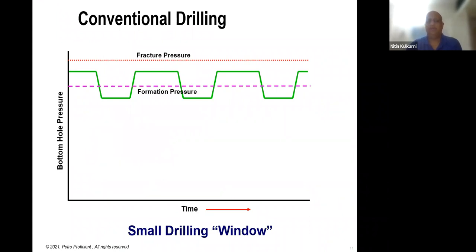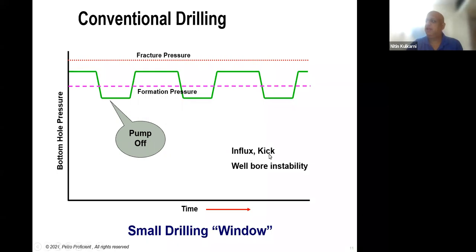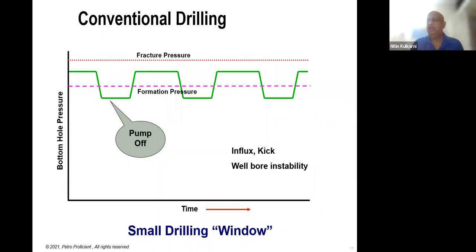These kinds of easy prospects are no longer available. What we have now is a profile with a very narrow margin between formation pressure and fracture gradient. With this narrow margin, when you switch off your pumps, pressure drops below formation pressure, and you might get an influx or a kick. You might also experience wellbore instability, where the open hole wall starts to collapse in the form of cavings.